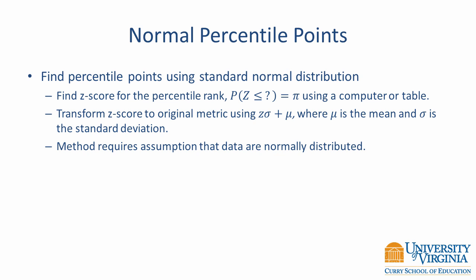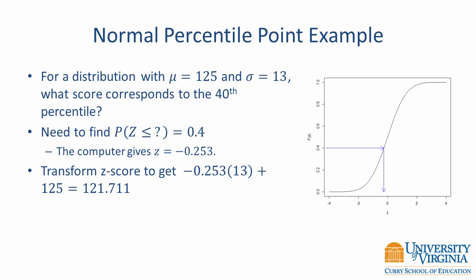A percentile point is obtained in a similar way, but we start with a known probability and find the corresponding z-score from the distribution function — it is the inverse of finding a percentile rank. The steps involve finding the z-score and then transforming to the original metric. For example, with a distribution having a mean of 125 and a standard deviation of 13, the score corresponding to the 40th percentile: from the inverse distribution function, the z-score for the 40th percentile is −0.253. Using a linear transformation, this converts to a value of 121.711. Thus, the 40th percentile is a score of 121.711.